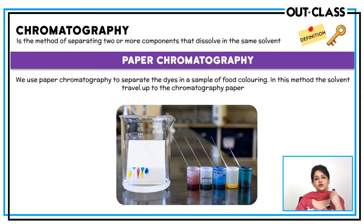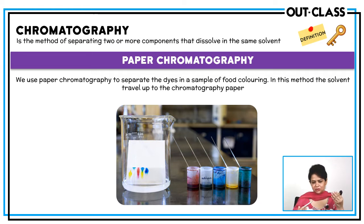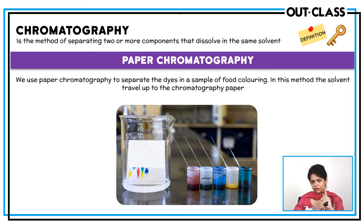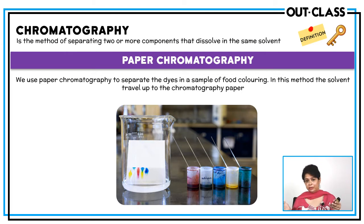The next technique is chromatography. Chromatography is based on the different solubilities of solids in the same solvent. If you have a mixture of more than one solid and you want to separate and identify these solids, chromatography is a good technique. However, all components of the mixture should be soluble in the same solvent — if any component is not soluble in the solvent, it won't be separated by chromatography.